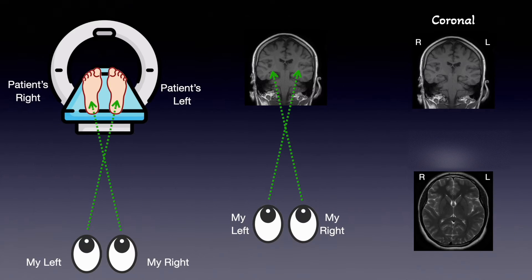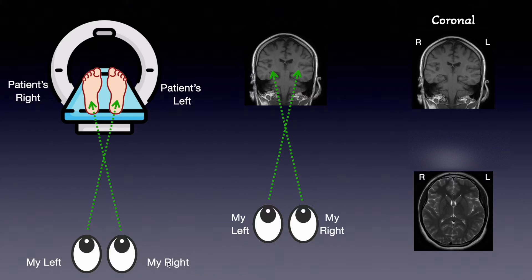Before we look at the MRI pictures and the structures, let's understand how we see the MRI picture and how we interpret it, so there will be no confusion about which side is the right side and which side is the left side. We're standing here — this is our left side, this is our right side. This is the patient lying on the MRI scan, and we're looking from the bottom of the patient's feet. So our right is the patient's left and our left is the patient's right side.